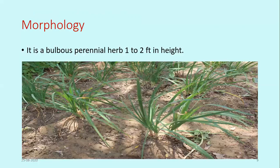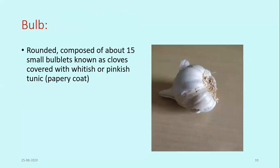Regarding morphology, it is a bulbous perennial herb with a height of one to two feet. It is a small herbaceous species also used as a vegetable. The bulb, as seen in photographs, is rounded and composed of about 15 small bulblets known as cloves, covered with a whitish or slightly pinkish tunic or papery coat.